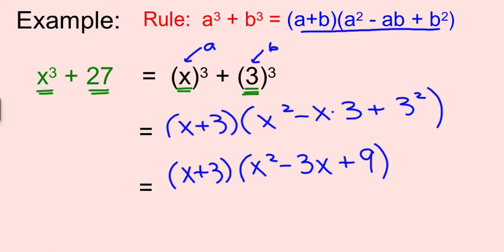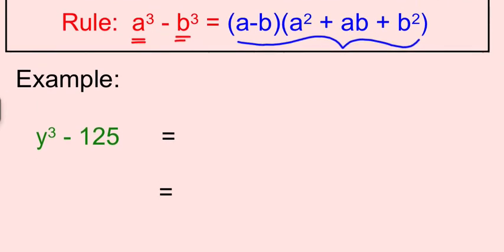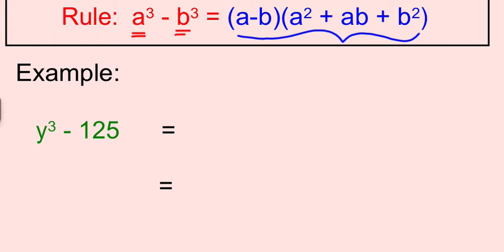All right, the last two examples are going to be when you have a subtraction. So this would be the difference of cubes. So be very careful. Your rule is different in the blue. This is what it's like in red. It's going to be a perfect cube minus a perfect cube. So the first step we need to do is we need to rewrite that 125. So it's going to be y³ minus, and then 5 times 5 times 5 is 125.